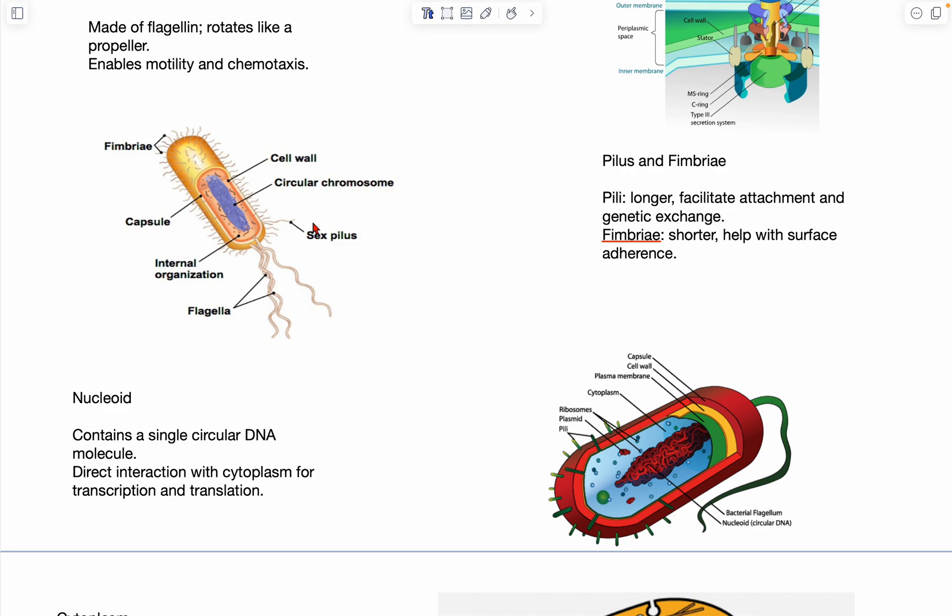And this basically creates genetic diversity and sort of allows the bacteria to share certain traits such as antibiotic resistance, which is how basically in the human body we gain resistance to antibiotics. And in comparison to fimbriae, fimbriae are a lot shorter, and they're a lot more frequent in comparison to pili.